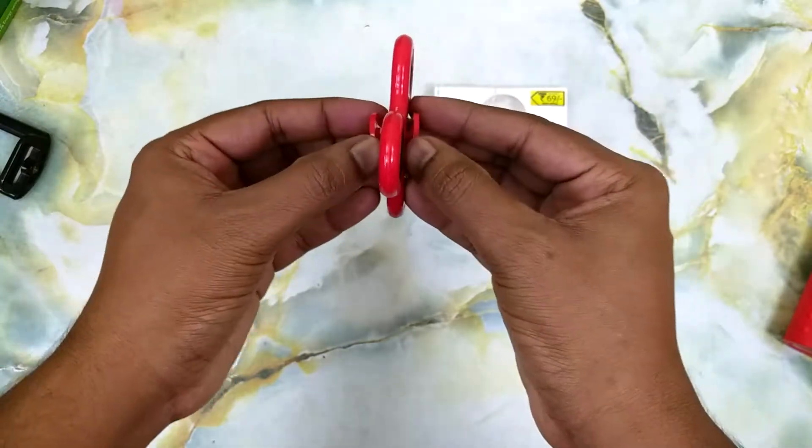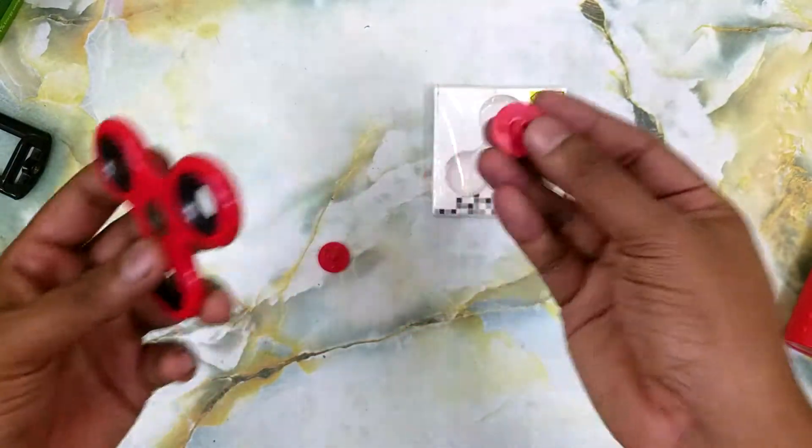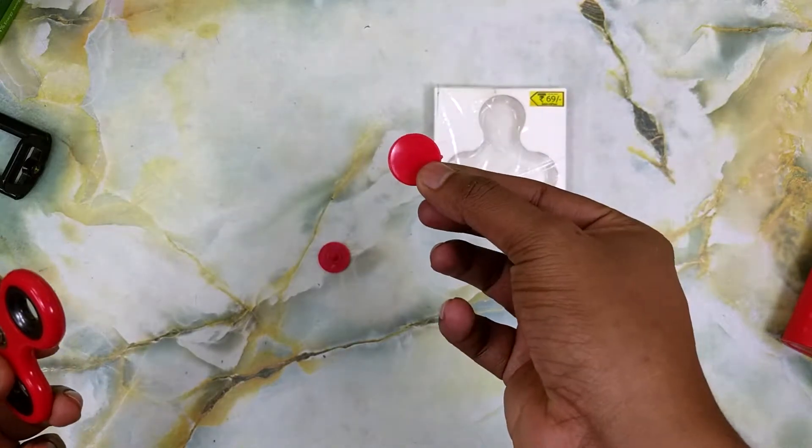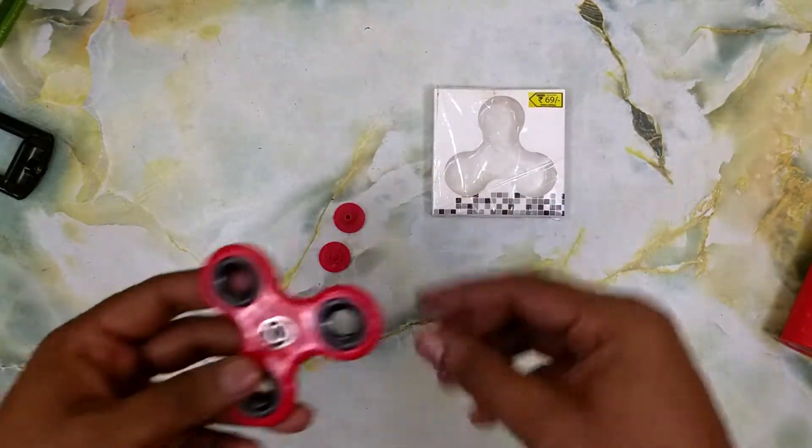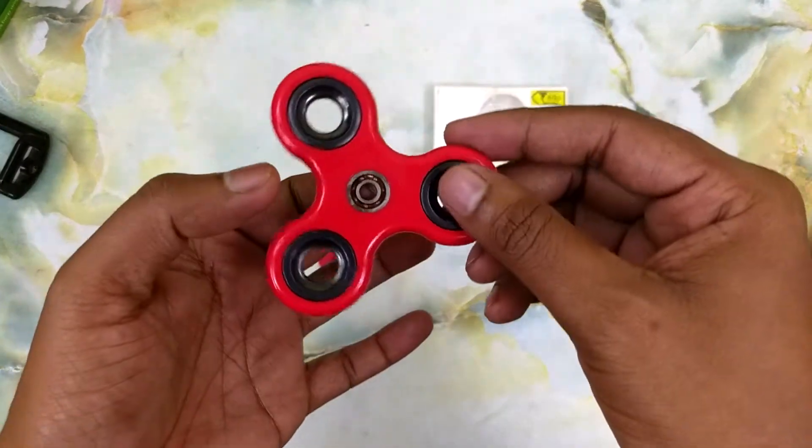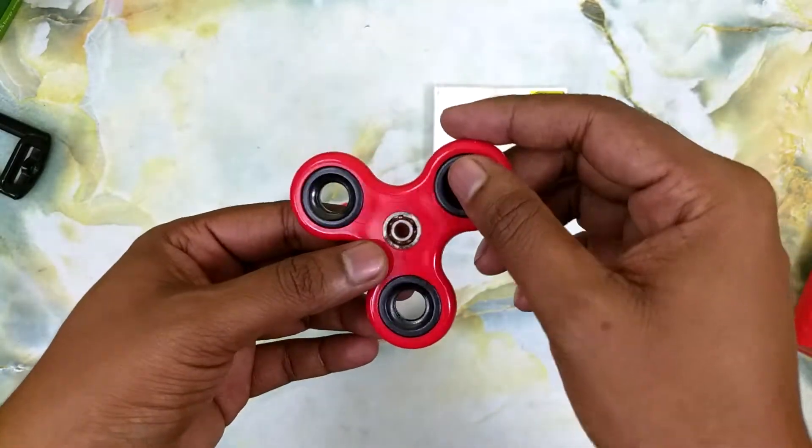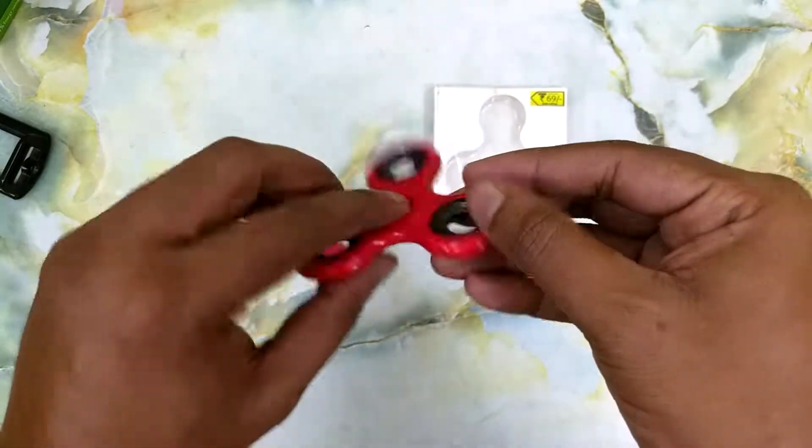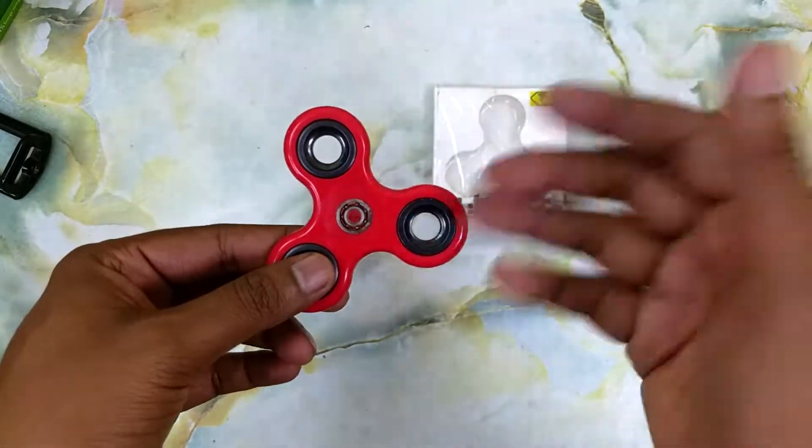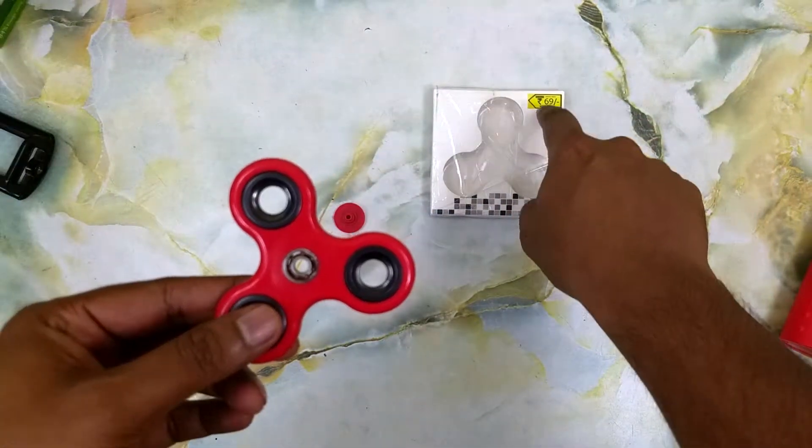When I pop these thumb holders open, this is what I saw. Now usually fidget spinners have a bigger ball bearing, but this one - now do you understand why they are selling it for 69 rupees?